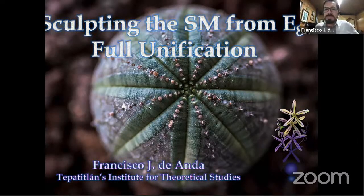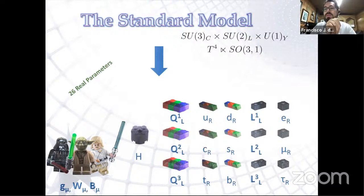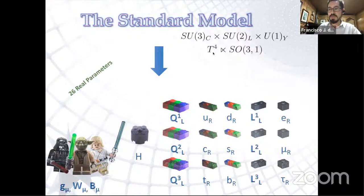The talk is about sculpting the Standard Model from E8 and full unification. Our starting point is of course the Standard Model — we see it as a bunch of legos from which the whole universe is made. We have fermions, the Higgs, and the forces, all defined by the symmetries of the Standard Model: the gauge symmetry and the Poincaré symmetry, the spacetime symmetry.